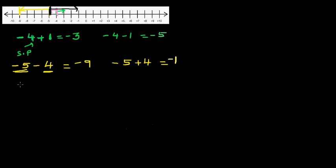What if it is negative nine plus seven? Let's do this without looking at the number line. You start at negative nine and you're going seven steps to the right. That should be negative two. You can always go back to the number line: from negative nine, going seven to the right — one, two, three, four, five, six, seven — which is negative two.